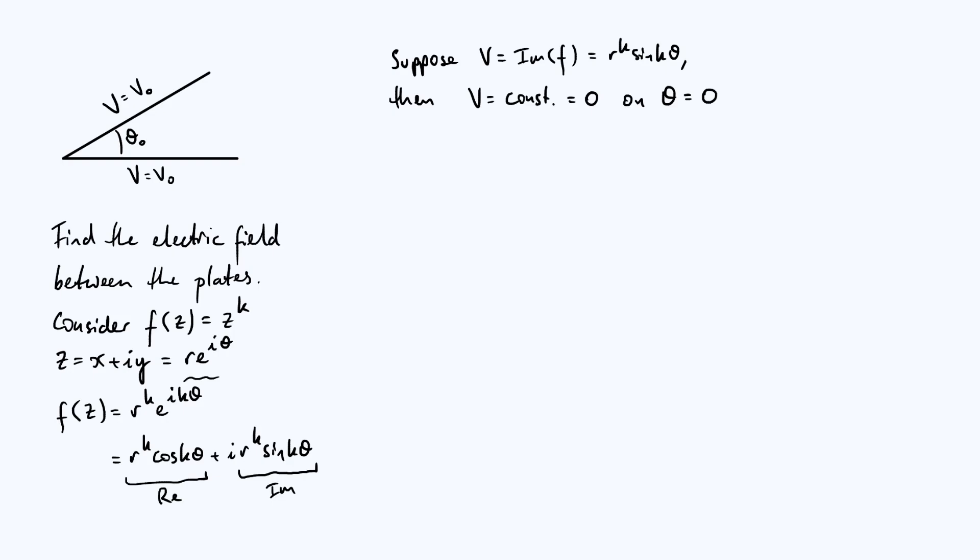Now, to satisfy the original boundary conditions of the problem that we're trying to solve, we need the potential to be constant on the surface θ = θ₀ as well, because that was our other conductor along which the potential is constant. We haven't said anything about the value of k, right? This parameter k that appears in our complex function, the power that z is raised to, and so we're kind of free to choose whatever k we want, and we can choose k such that an appropriate boundary condition is satisfied. So if we want to make V = 0 on the surface θ = θ₀, we can note that sine of kθ is zero wherever the argument of the sine, in other words kθ, is equal to an integer multiple of π, because sine becomes zero at zero, and π, and 2π, and so on, and for negative values as well, like -π, -2π, and so on.